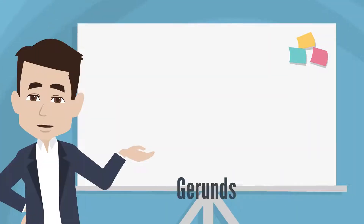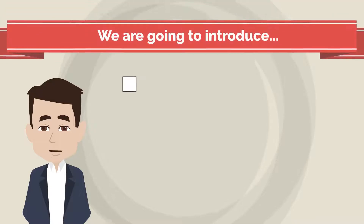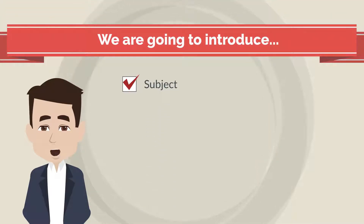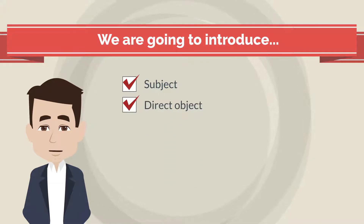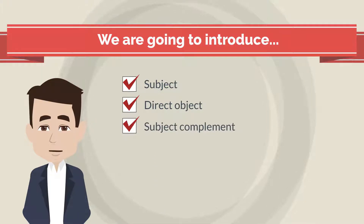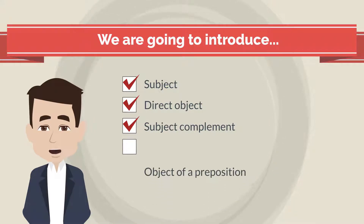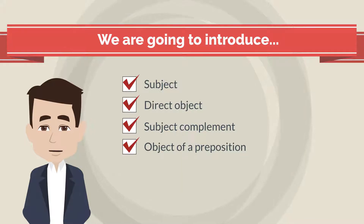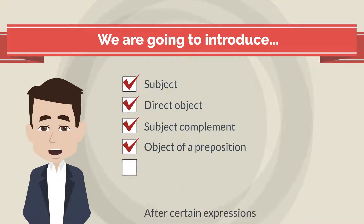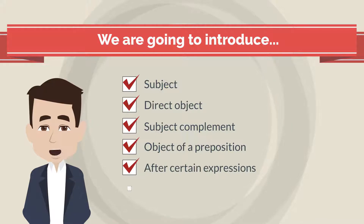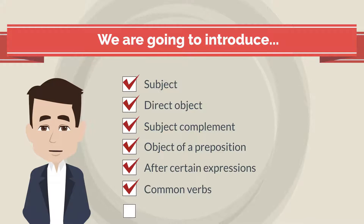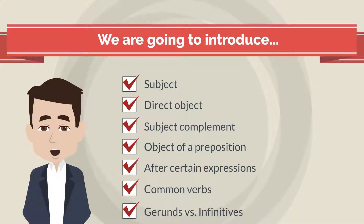Today, we are going to learn about gerunds. First, we will look at them when they are the subject of a sentence. Next, we will look at them when they are the direct object of the sentence. After, we will look at them when they are the subject complement. Additionally, we will look at them when they are the object of a preposition. Then, we will look at them when used after certain expressions. Next, we will look at some common verbs used with gerunds. Lastly, we will look at the differences between gerunds and infinitives.